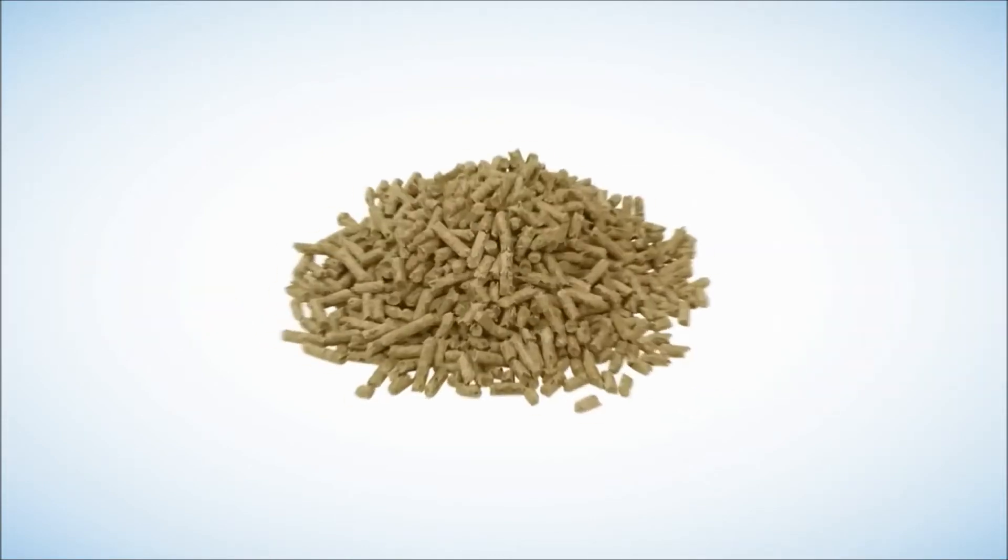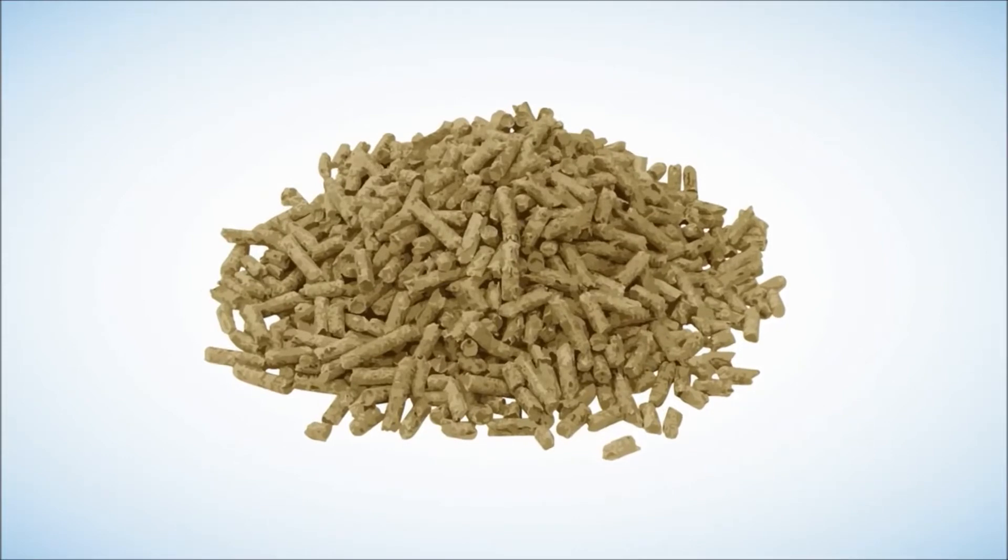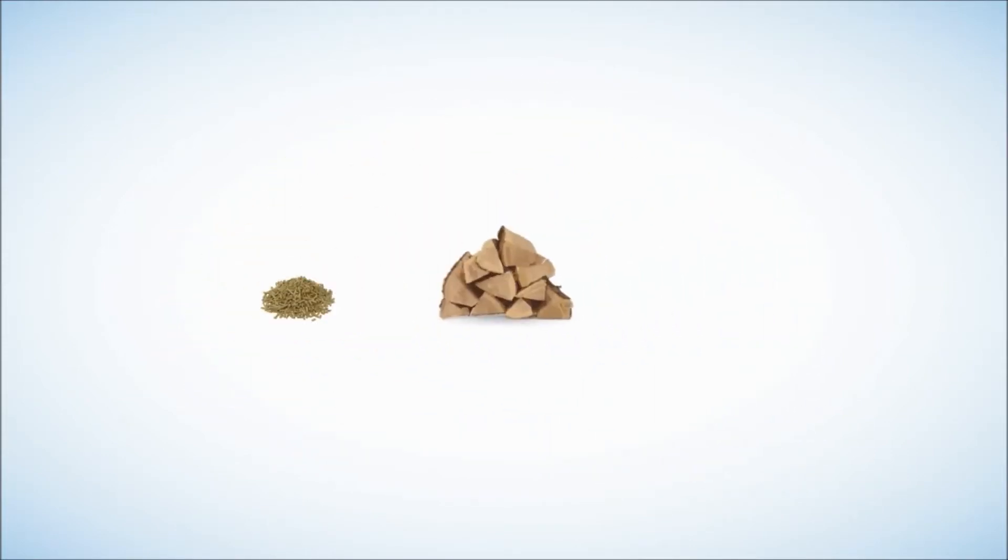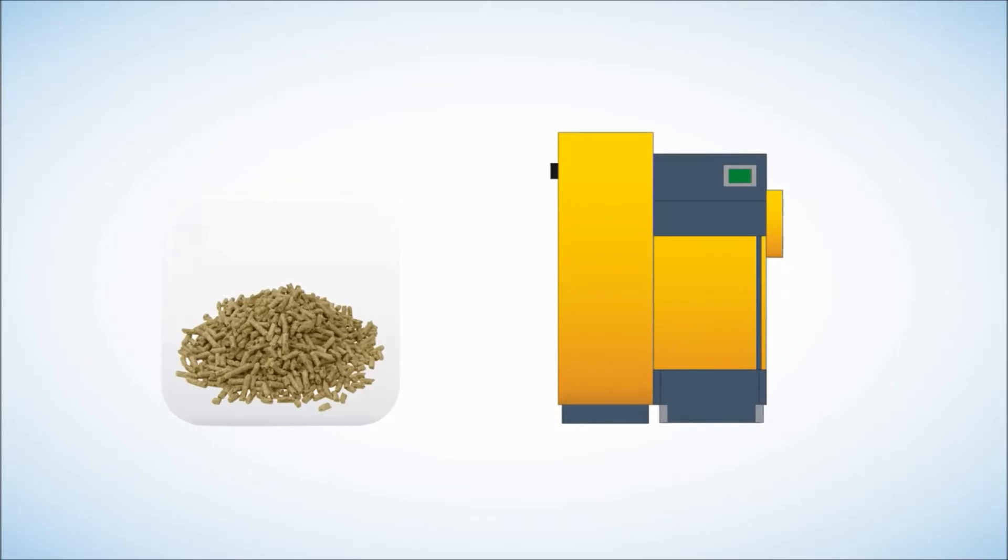Wood pellets are generally manufactured from byproducts from sawmills and other wood processing industries. They need less storage than logs or chips as they have a higher calorific value for the same volume. Wood pellet boilers are generally fully automated with the pellet sucked by vacuum straight into the boiler from the store, so are easier to run than log boilers.